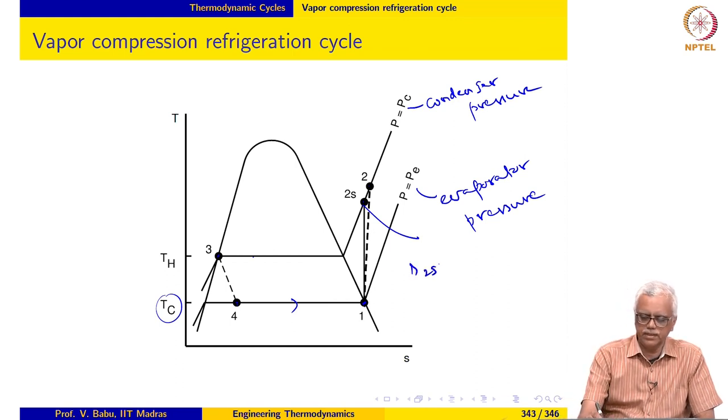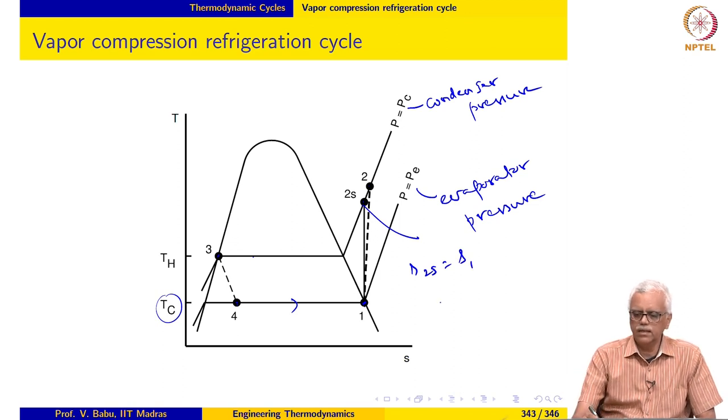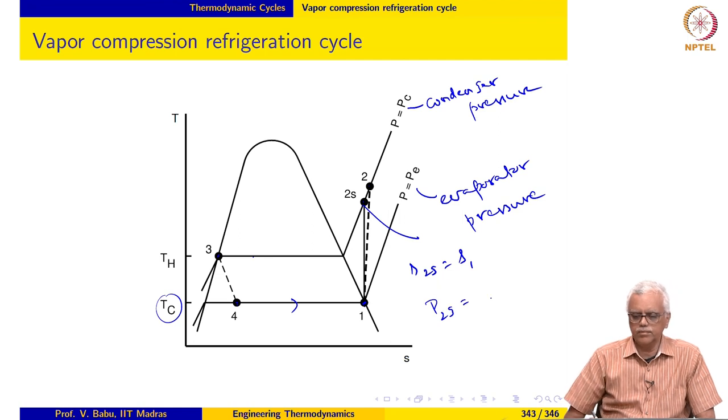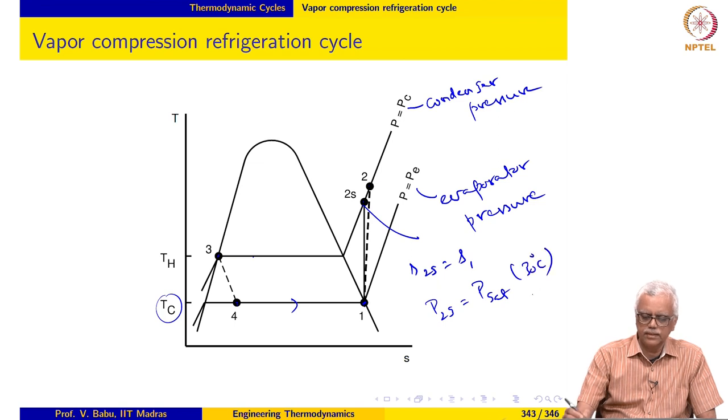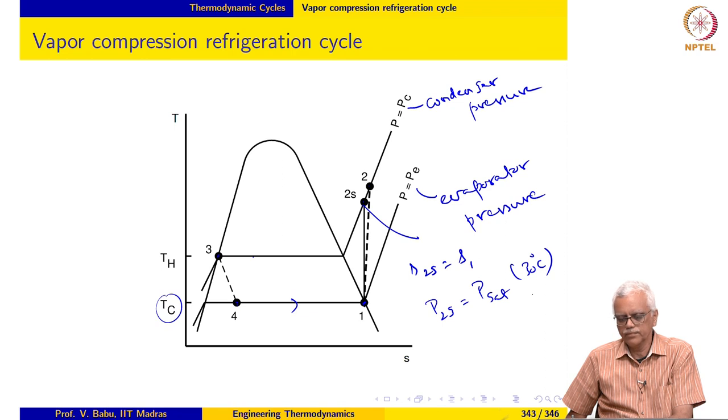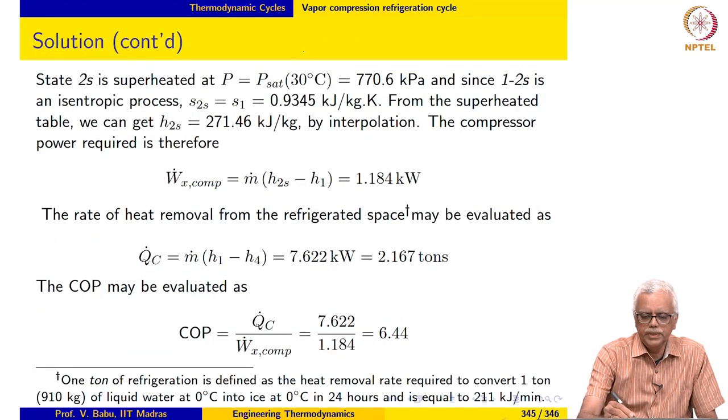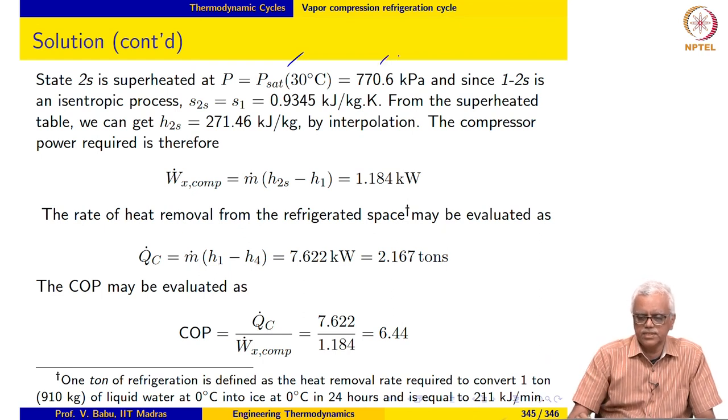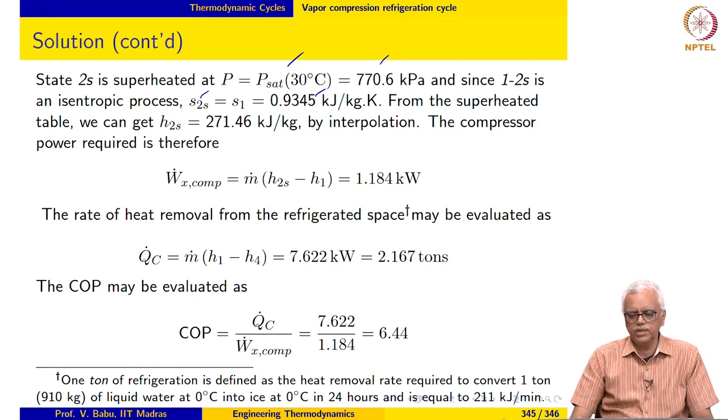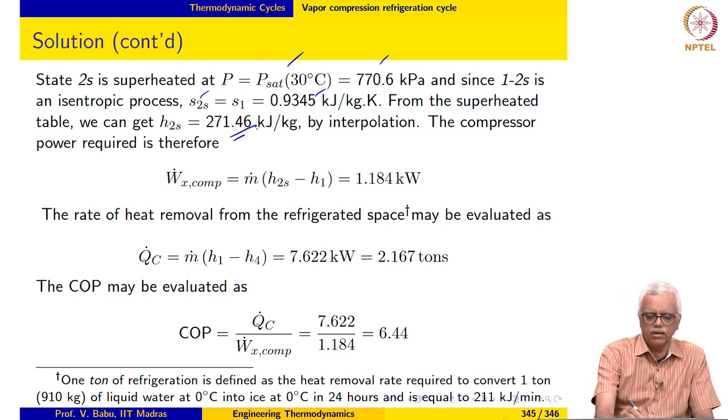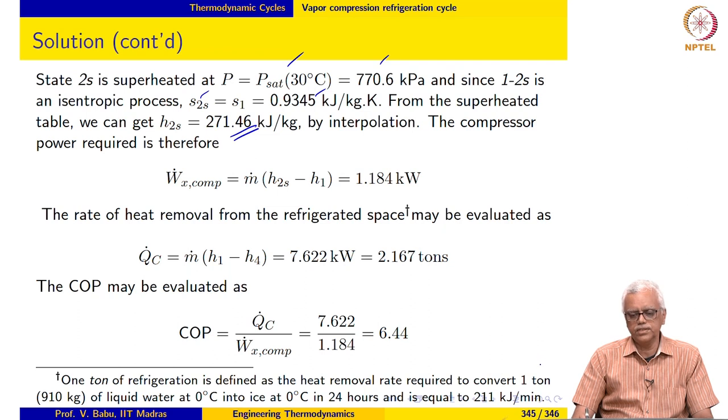We can see from here that S2S is equal to S1 and P2S is also given, that is P sat of 30 degrees Celsius which is 776 kilo Pascal. S2S specific entropy is equal to S1 equal to 0.9345. You can see that the state 2S is superheated and we can actually calculate H2S to be 271.46 kilojoule per kilogram by interpolation.